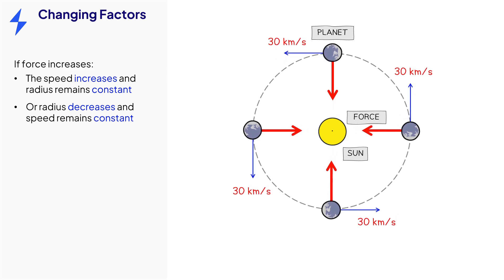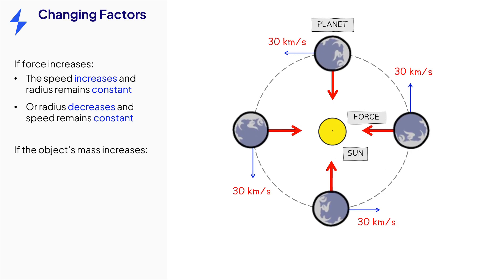Going back to our original scenario, what if the object in circular motion had a greater mass? Well, in this case, to maintain the same radius and orbital speed, centripetal force must increase.